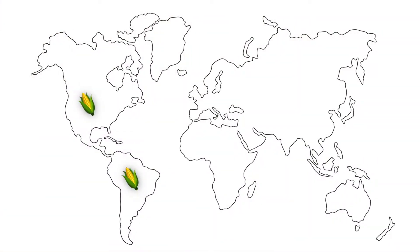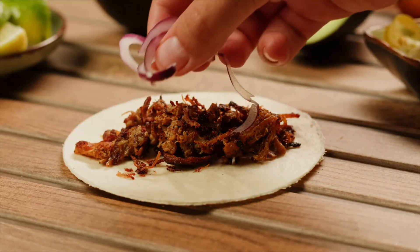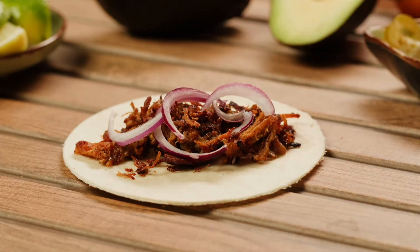Hey explorers! It's Justin again. Talking about population growth was getting me really hungry, so I'm out getting some carne asada tacos. And this got me thinking about globalization. Corn from these tortillas comes from the Americas, the steak comes from Europe and Asia, and these ingredients were combined in modern-day Mexico. Tacos are a blend of food products and cultures from different parts of the world — a perfect example of globalization.